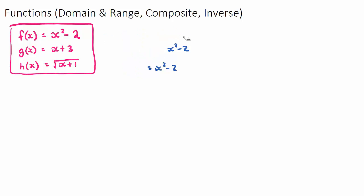Let's find the output when we give the input some numbers. If you see f(3), you find the function f — which is x² - 2 — and substitute 3 in for x. So 3 is our input variable, and we get 3² - 2 = 9 - 2 = 7. So if the input is 3, the output is 7. That's what f(3) means.